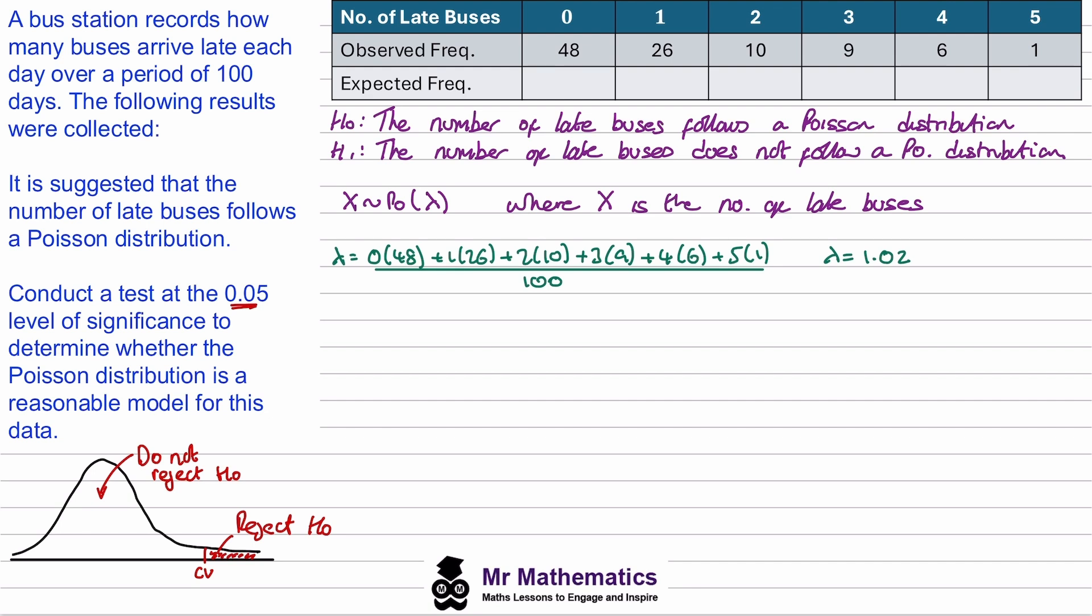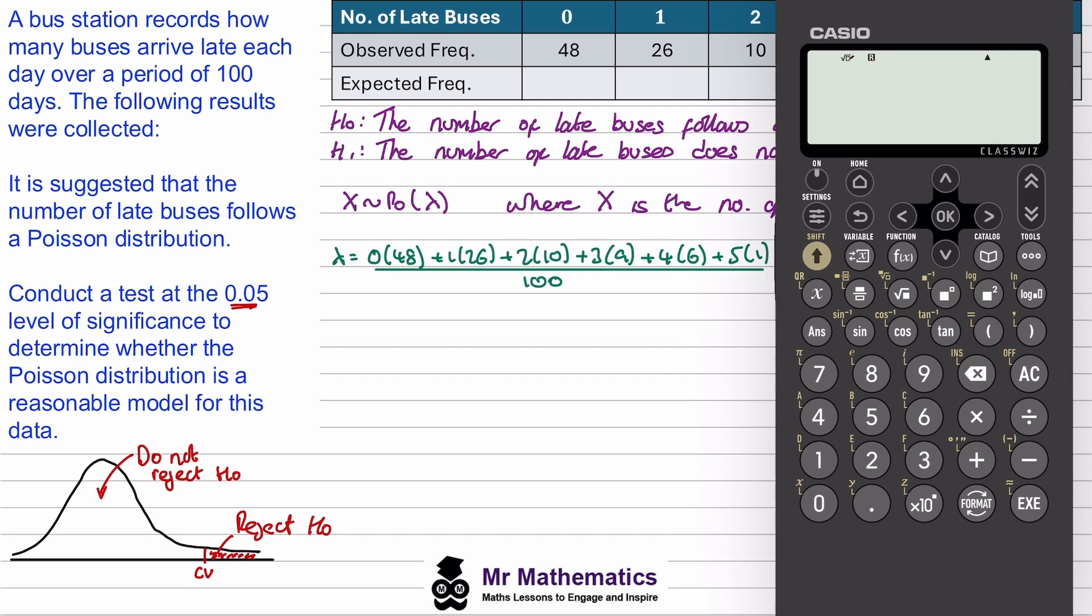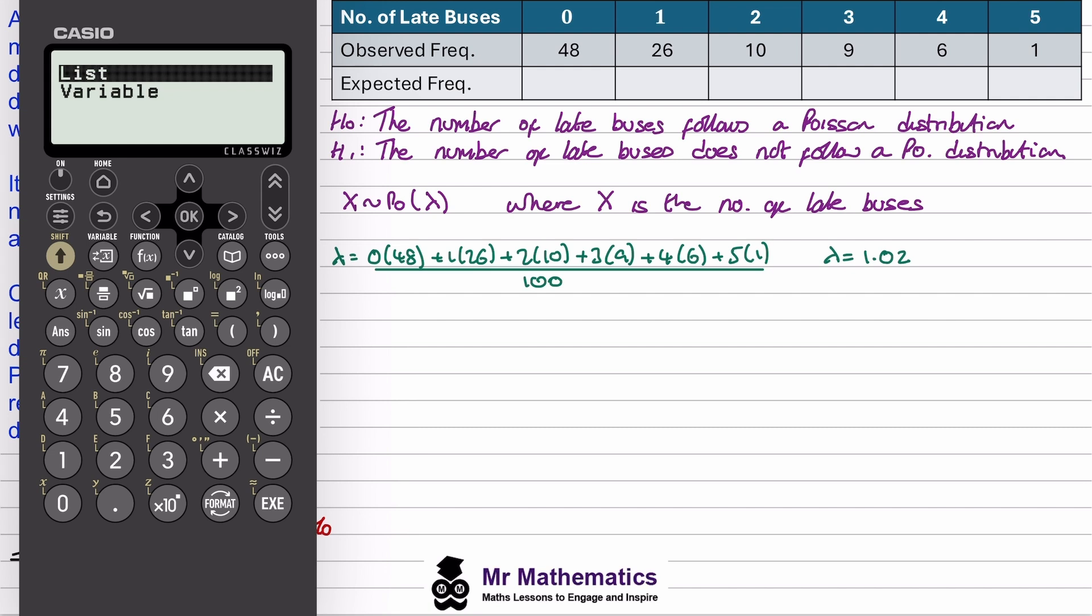So we need to find the probability of x equaling 0, 1, 2, 3, 4, and 5. Now we could do this using a formula, but it's a lot easier to do it on our calculators. If we go to home we'll choose distribution. Then we want to scroll down and we'll press cross on PD. Now in this instance I'm going to create a list. And the x values will be our number of late buses. So 0, 1, 2, 3, 4, and 5. And we've worked out lambda to be 1.02. So I'll execute that. And now we've got our probabilities.